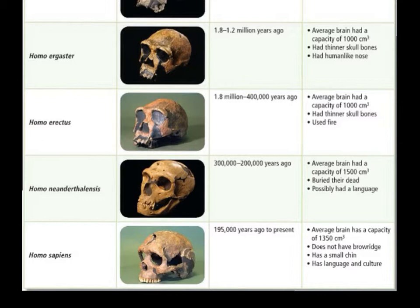Homo heidelbergensis individuals had brow ridges, which are represented in a lot of the pictures — that part over the eye socket where the brow portion of the forehead is very pronounced, almost like the eyebrows stick out. In modern people, that part of the skull smooths out because it's making more room in the front for the prefrontal cortex, the front part of the brain. Homo heidelbergensis also had a receding chin line, which made them somewhat unlike modern species. The receding chin is basically like an underbite, where the chin almost tucks in — that's how a lot of previous species looked normally.